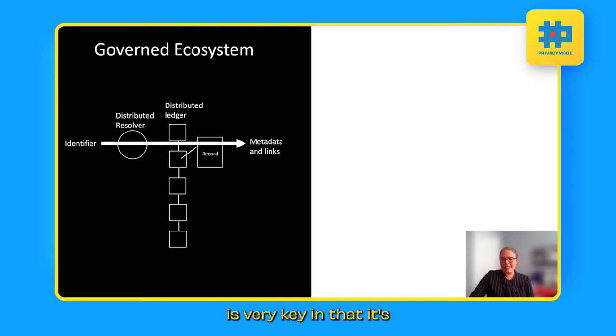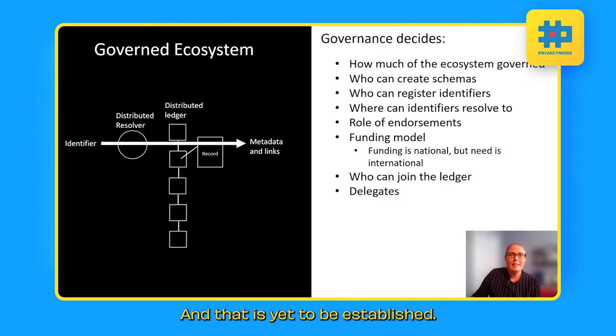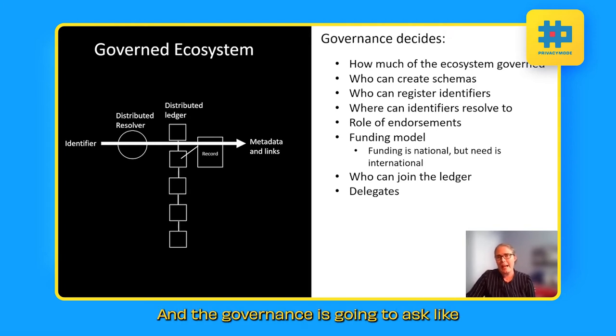And this is very key in that it's a governed ecosystem. Certainly in the research identifier world, we're talking about we would be looking at building a system that is extremely governed. Because that is yet to be established. That would involve many stakeholders. And the governance is going to ask like how much of the ecosystem is directly governed and how much is open. Who, for example, is allowed to write different schemas? Who is allowed to register identifiers?